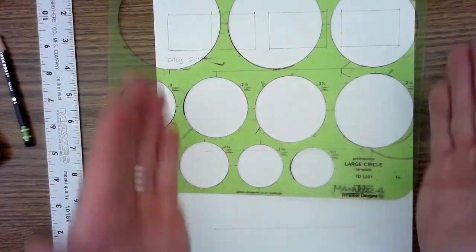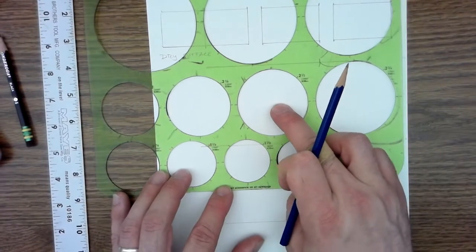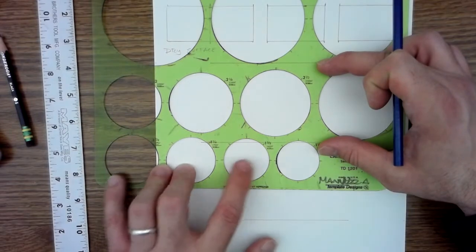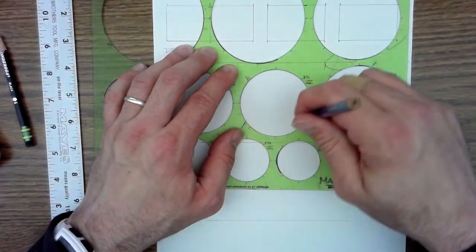So I'm going to line that up by eye in the middle of my paper and in the middle of the row. And I'm just going to trace three circles. Why do I start with the middle? Because it makes it easier for me to space them out.